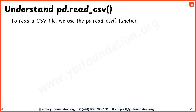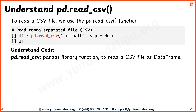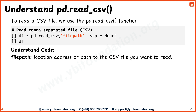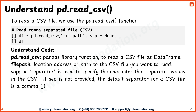Let's understand how to read a CSV file using the pd.read_csv function from the pandas library. This function takes two arguments: first, the file path, and second, an optional argument sep or separator. pd.read_csv reads the CSV file and converts it into a DataFrame, which is a table-like structure in pandas. The file path specifies the location of the CSV file. The sep parameter lets you specify which character is used to separate values. If you don't provide a separator, pandas will assume the default separator as comma.